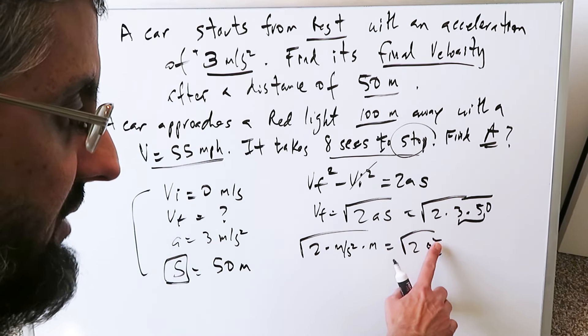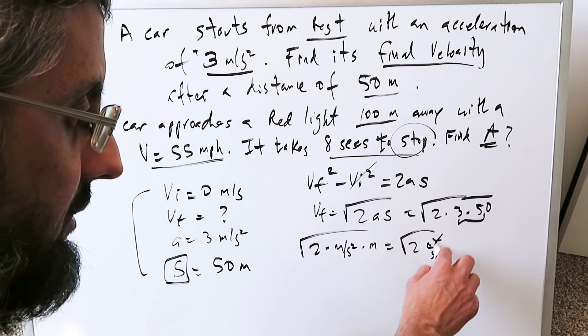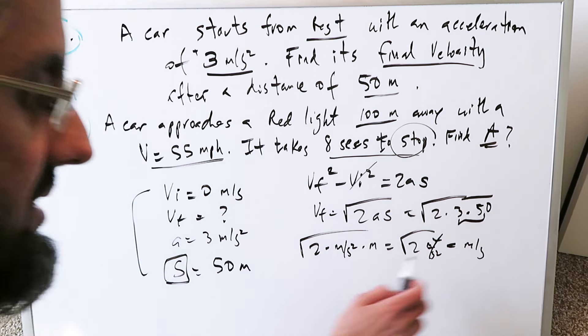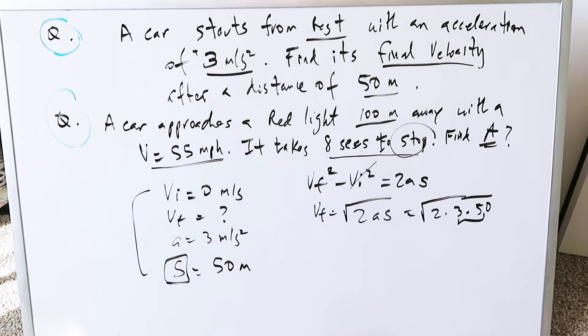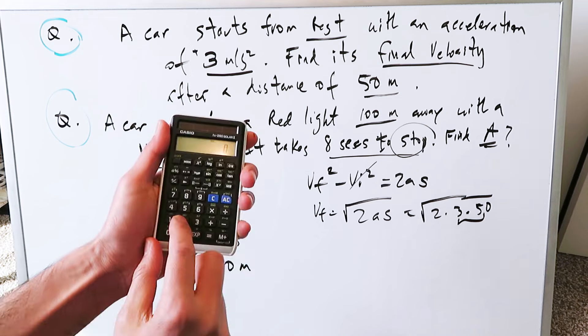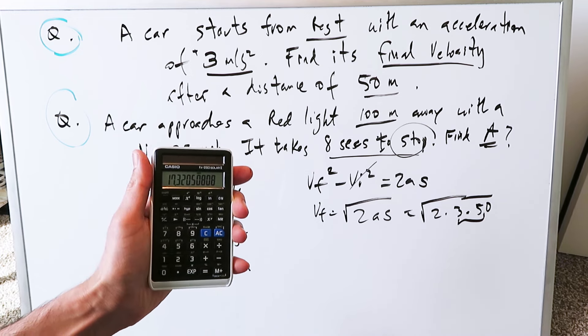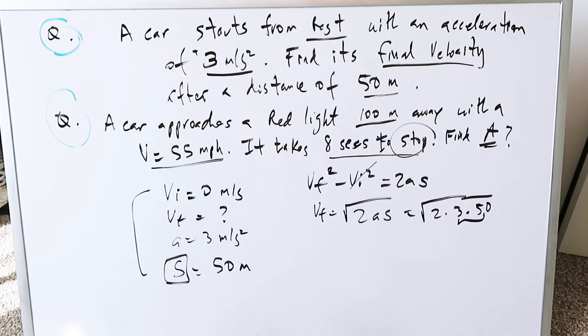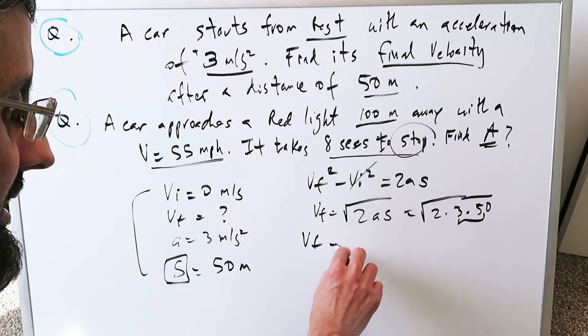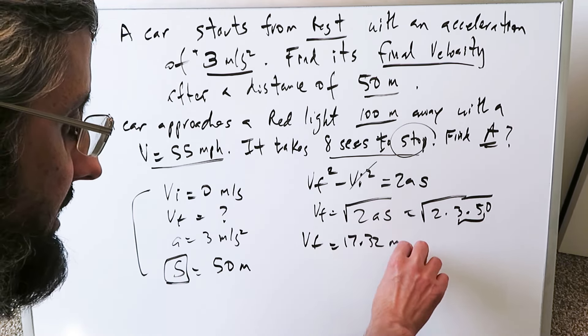I'm ignoring these for right now. These meters squared, seconds squared, when you do the square root, will come out as meters per second, which is why your value here in terms of your units will be meters per second. So keep that in mind. Just bring out your calculator and do the computation. 2 times 3 times 50 square rooted, your answer is 17.32 meters per second. Your final velocity is 17.32 meters per second.